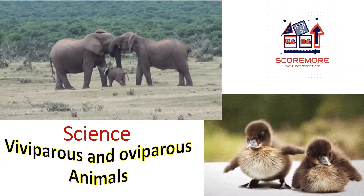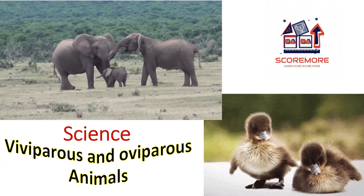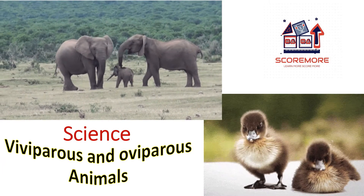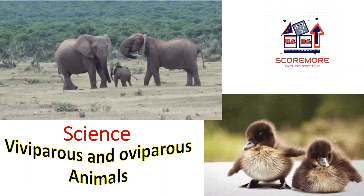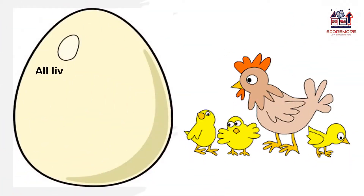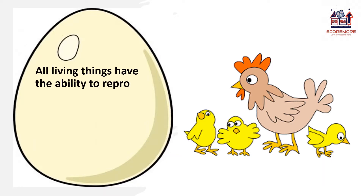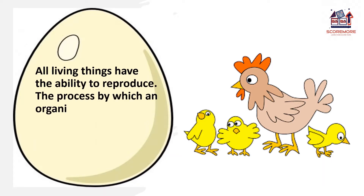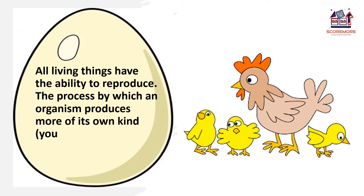Hi friends, welcome to HiHouse Korma. Today we are going to see oviparous and viviparous animals. All living things have the ability to reproduce. The process by which an organism produces more of its own kind is called reproduction.